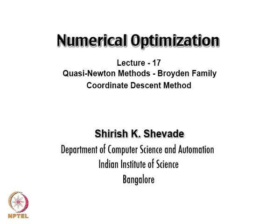Welcome back to this series of lectures on numerical optimization. In the last class, we discussed symmetric rank 1 update and rank 2 update. In particular, we saw that there is no guarantee in symmetric rank 1 update that the new matrix B_{k+1} is positive definite, even though B_k is positive definite. So we decided to use the symmetric rank 2 update.